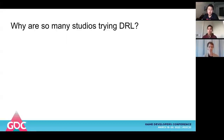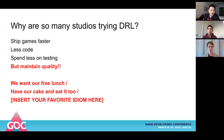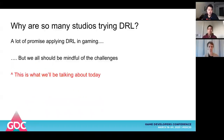First, why are so many studios trying deep reinforcement learning? Well, they want to ship games faster, write less code, spend less time on testing, and of course maintain the quality. It's one of those situations where we want to have our cake and eat it too. And this is really the core of why a lot of studios are trying this approach. There is a lot of promise in applying deep reinforcement learning in gaming — it can solve quite a bit of challenges, but we should be mindful about some of the difficulties.